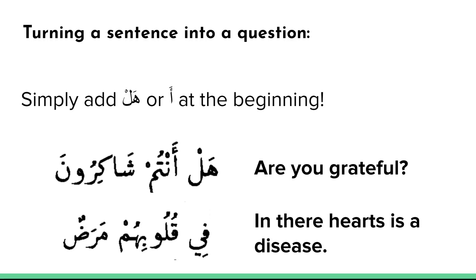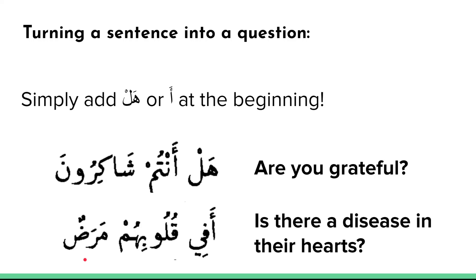Similarly, I can take the sentence fi quloobihim maradun, meaning 'in their hearts is a disease.' Quloob means hearts, quloobihim means their hearts, and maradun means disease. If I put the prefix alif at the beginning of this sentence, it changes it to afi quloobihim maradun — 'is there a disease in their hearts?' So it converts it into a question.